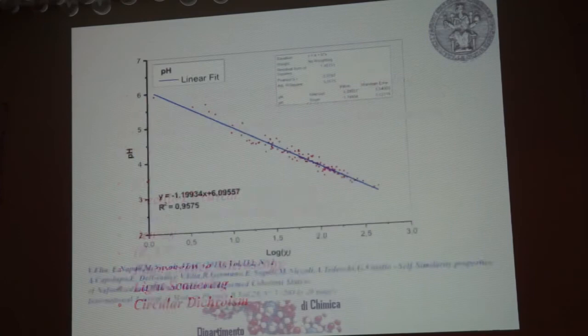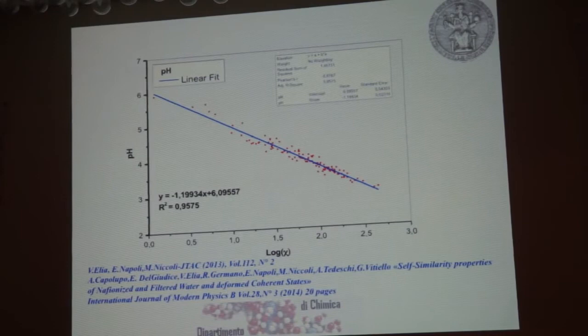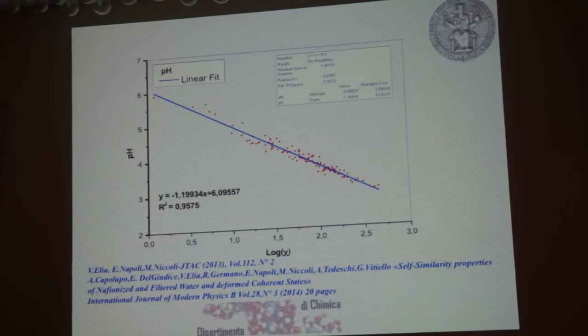Here we show an extraordinary variation of the pH of up to about three units, and the linear correlation between pH and the logarithm of electrical conductivity, as if we were dealing with a chemical acid. This is published in the first reference.